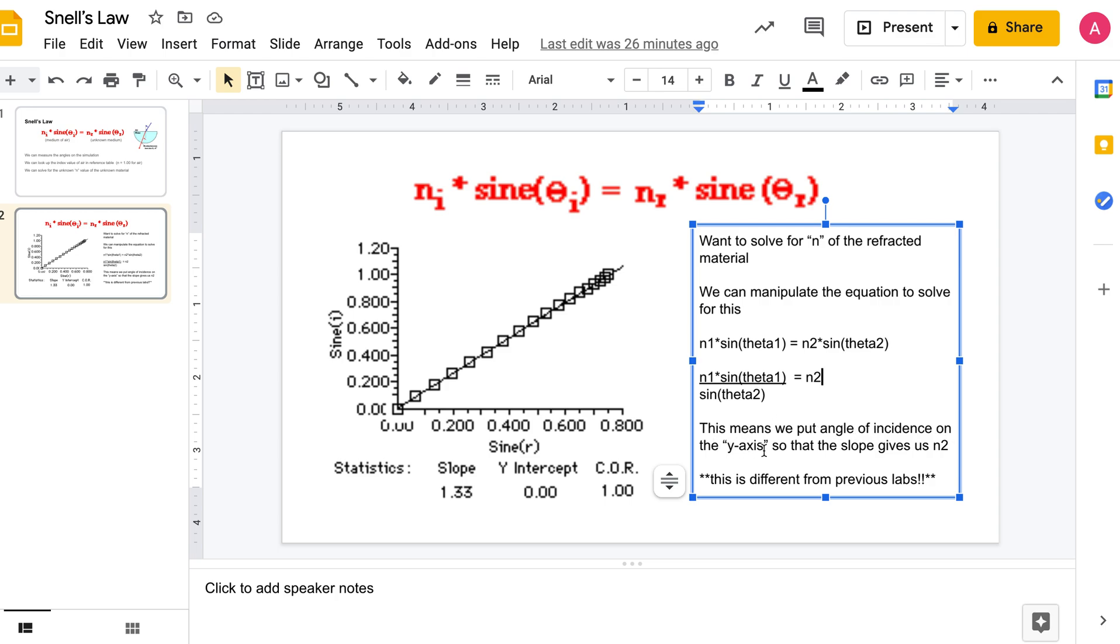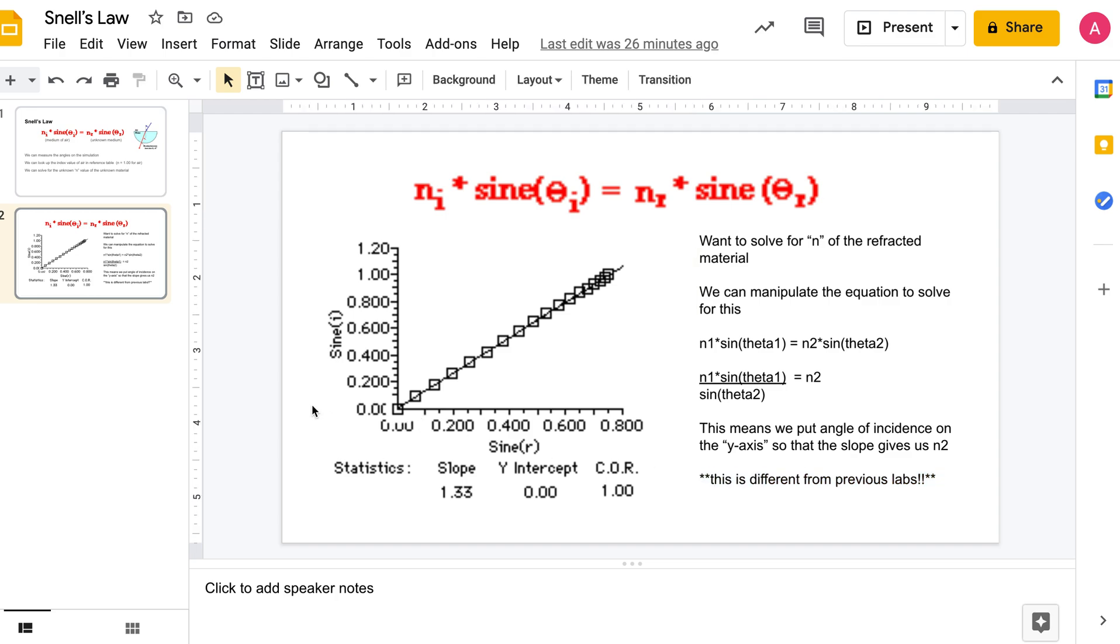If we put the angle of incidence sine θ on the y-axis, when we find the slope it's going to be the y-axis divided by the x-axis, which gives us n₂. That's why we set it up this way. This means we put the angle of incidence on the y-axis so that the slope gives us n₂. If you were to do it the opposite way you could still get the n value, but you would need to do an additional step in the mathematics. Obviously this is different from previous labs because we've kind of drilled it into you that independent variable goes on the x and dependent on the y, but for this case to make the math work out we're going to do the opposite.